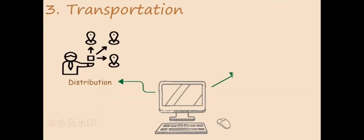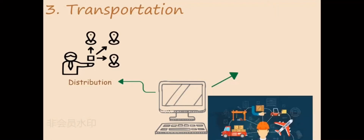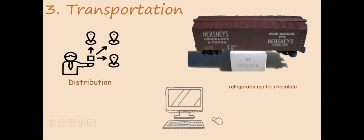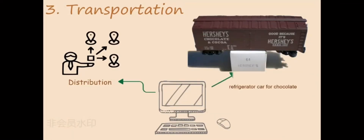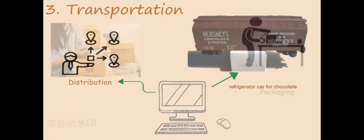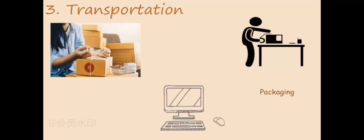The next step is transportation. With the development of globalization, there are more and more private cars, which cause environmental pollution. In summer, the transportation of chocolate requires trucks with air conditioning, which also increases carbon emissions. Then they distribute the chocolate to individuals or businesses for sale.